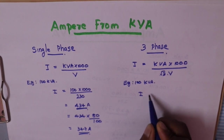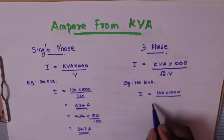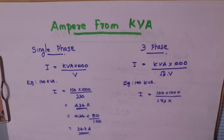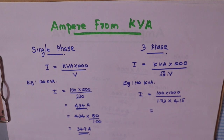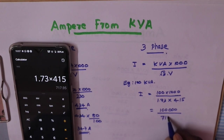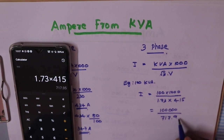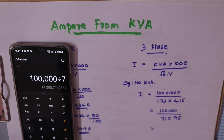Now for the three-phase generator: 100 kVA. This is the full load current. The formula uses root 3, which is 1.73, and the phase voltage is 415V. The calculation is 100 × 1000 divided by (root 3 × 415), giving 717.95 in the denominator.